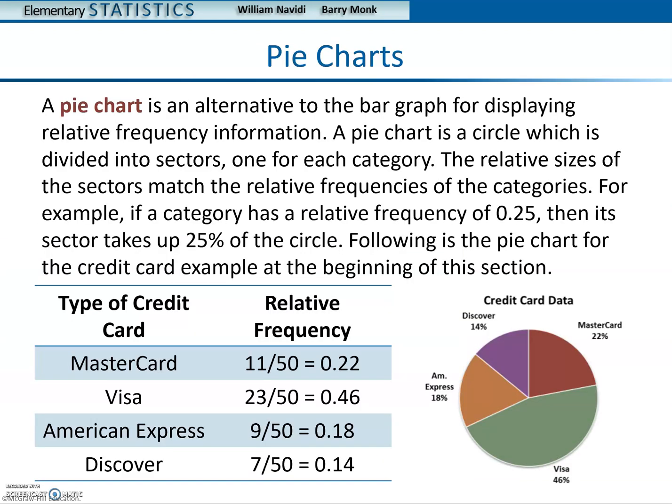A pie chart is an alternative to the bar graph for displaying relative frequency information. A pie chart is a circle which is divided into sectors, one for each category. The relative sizes of the sectors match the relative frequencies of the categories. For example, if a category has a relative frequency of 0.25, then its sector takes up 25% of the circle. Notice 0.25 multiplied by 100 is 25%.